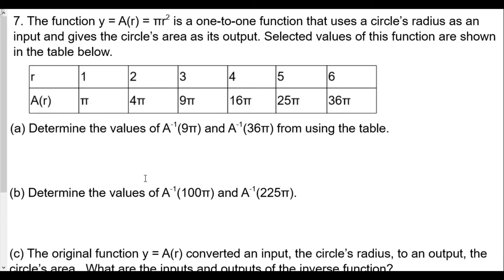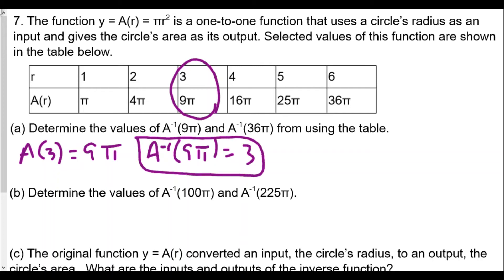Now we get to number 7. A function y = A(r) = πr² is a one-to-one function that uses a circle's radius as input and gives a circle's area as output. Selected values of the function are shown. Determine inverse A of 9π. Well, we can look at the table and since A(3) equals 9π, that means A inverse of 9π will equal 3. And then we look at A inverse of 36π. We know that if A(6) equals 36π, then A inverse of 36π equals 6.